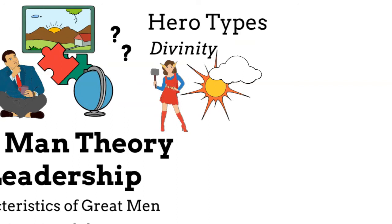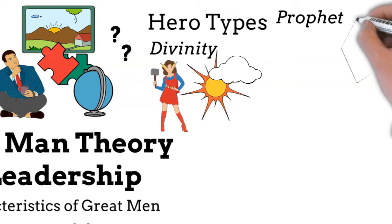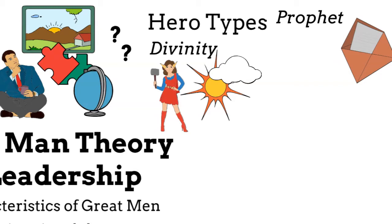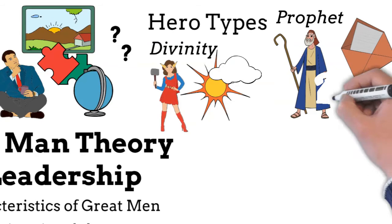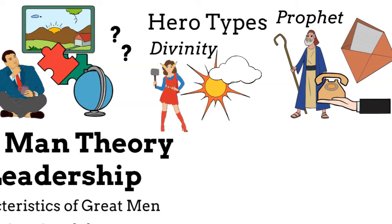The prophet hero of Great Man Theory is the hero seen as an envoy, messenger, or similar, on behalf of a god or several gods. As in the case of the divine hero, the prophet hero belongs to the past, and new ones cannot emerge in modern times, at least if you believe Great Man Theory. The prophet hero is perceived as being in contact with the divine authorities, legitimating following the prophet. Jesus and Moses are examples of prophet heroes.